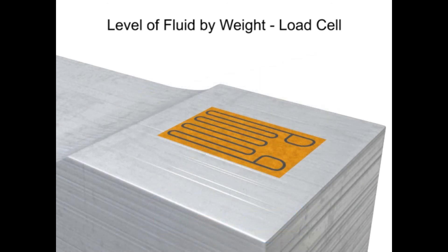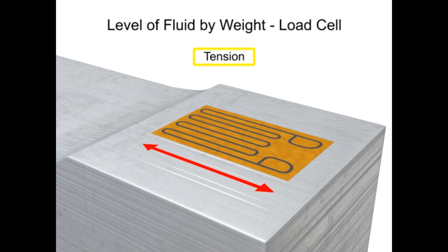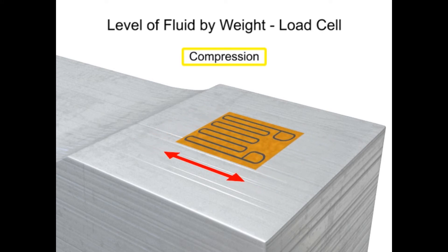As force or weight is applied to the load cell, the strain gauge deforms and causes the electrical resistance to change. In tension, the area narrows and the resistance increases, and conversely, in compression, the area thickens and resistance decreases.